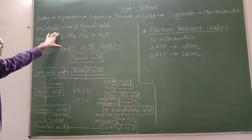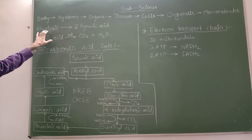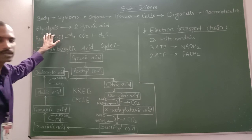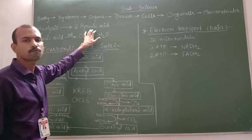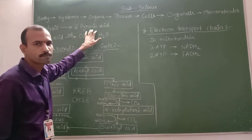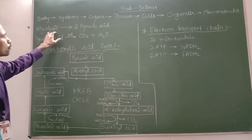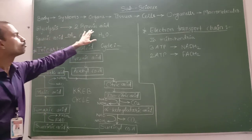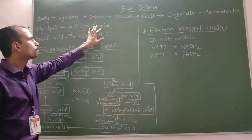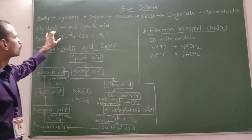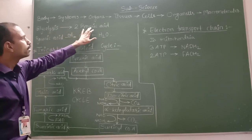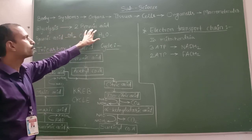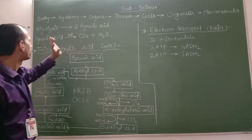In the glycolysis process, glucose is completely oxidized and two molecules of pyruvic acid are formed from one molecule of glucose. Glucose is a six-carbon compound, but a pyruvic acid molecule is a three-carbon compound.